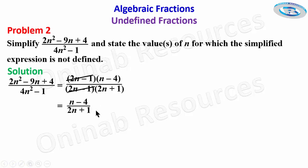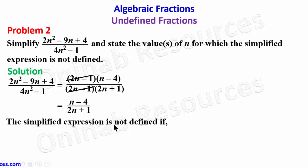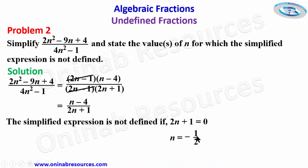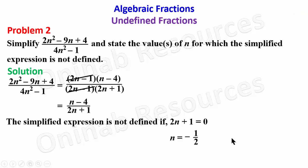The simplified expression is not defined if 2n + 1 = 0. Solving this, we take positive 1 to the right-hand side to get 2n = −1, then divide both sides by 2 to get n = −1/2. That is the end of the solution to problem two, and the highest we can go in this tutorial.